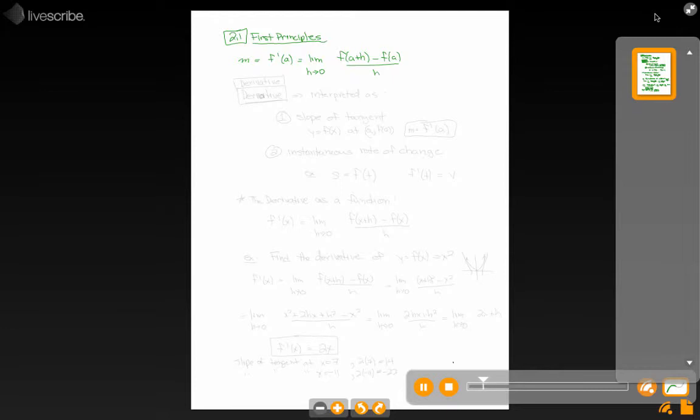So we should describe what the derivative is. If we're going to spend a whole bunch of time talking about derivatives, we better define what it is. It's interpreted as one of two things: the slope of the tangent. So if you've got the curve y equals f of x at a, at the point a comma f of a, the slope of the tangent is going to be f prime of a.